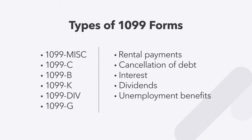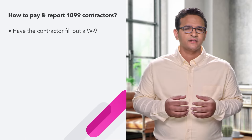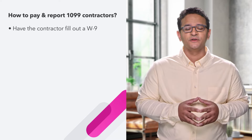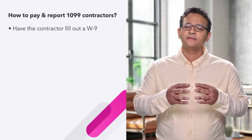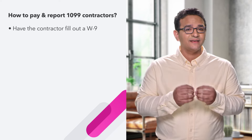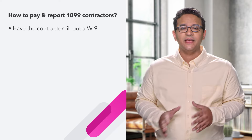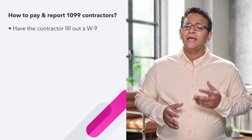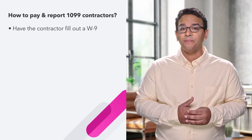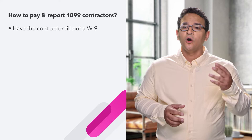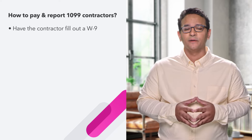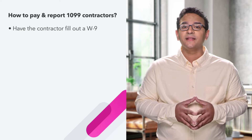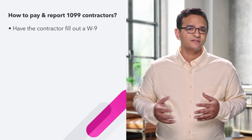Now let's talk about the right process to pay and report 1099s for contractors as a small business, because there are several steps involved. First, make sure your contractor fills out Form W-9. This is the formal document where the contractor provides the business their legal name and tax information. It is recommended that you do not make a payment to the independent contractor until you receive that W-9 form, especially when the cumulative amount for the year reaches $600.